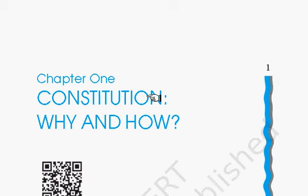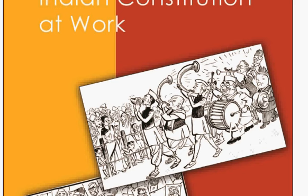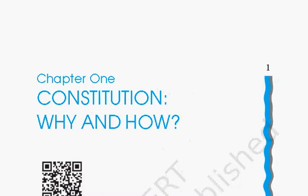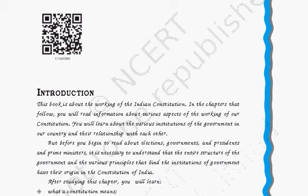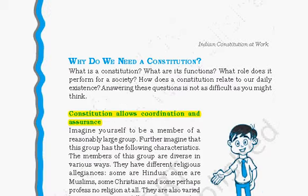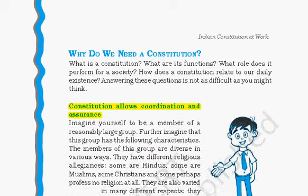Hello everyone and welcome to Serendipity in Quarantine. Today we are going to see 11th standard political science NCERT, that is Indian Constitution at Work, and we will be seeing the first chapter from it, that is Constitution: Why and How. In this chapter we will be learning why the constitution was necessary, how it was formed, and how it is made a legitimate source of rules. So let's go ahead — why do we need a constitution?